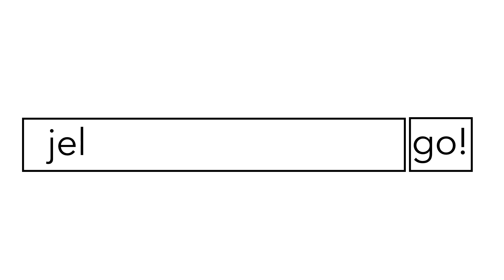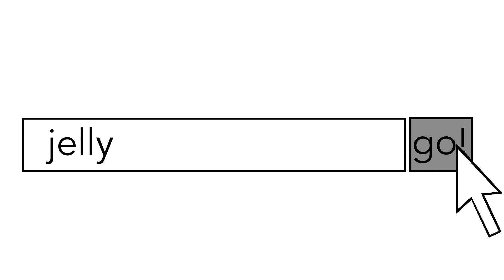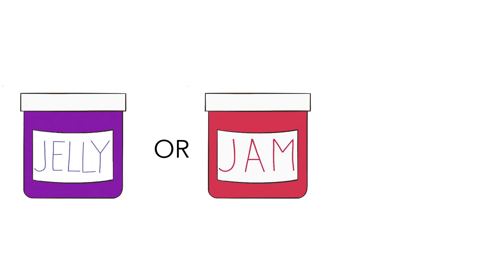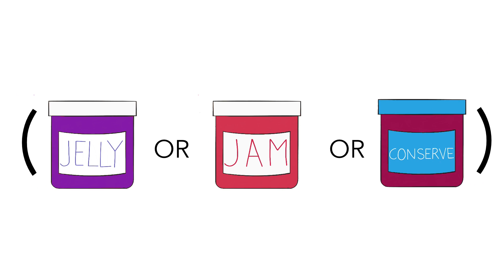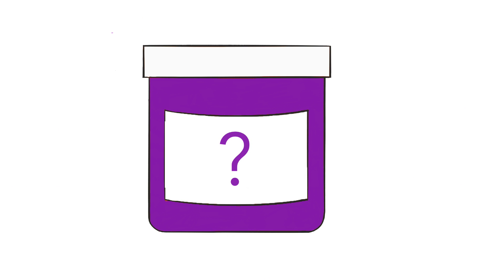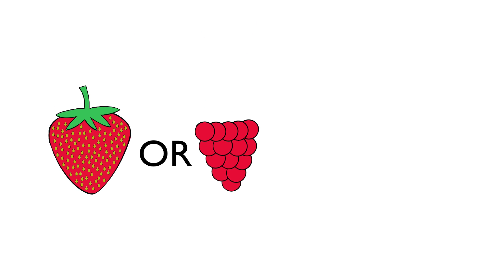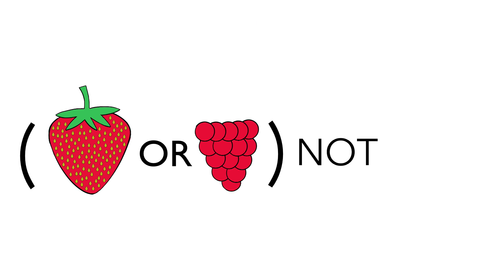A search for jelly could look like this: (jelly OR jam OR conserve). If you wanted a particular flavor of jelly, you could search for (strawberry OR raspberry) NOT apricot.